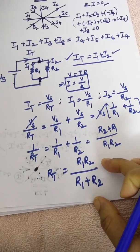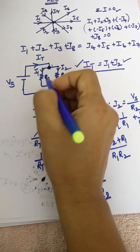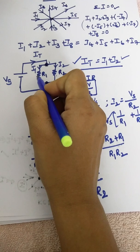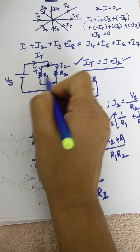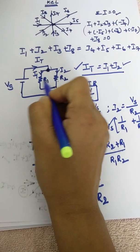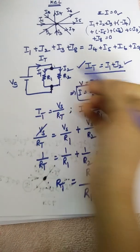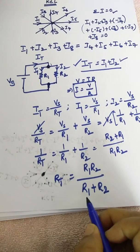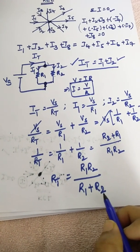Now we have learned one more topic. What is that? If two elements are connected, let us have resistors. In this case we have resistors. If two resistors are connected in parallel, what is the total resistance? R1 R2 by R1 plus R2.